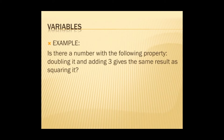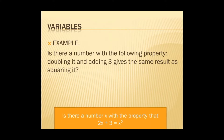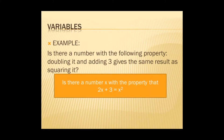Example: Find a number with the following property — doubling it and adding 3 gives the same result as squaring it. Find a number x with the property that 2x + 3 equals x squared. Here in the sentence, we introduce a variable to replace the potential and ambiguous word 'it'. So in the sentence, we replace 'it' with x.